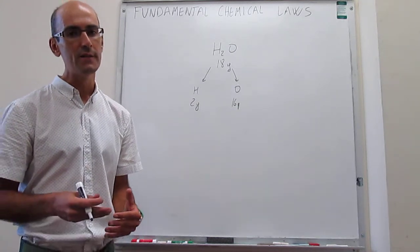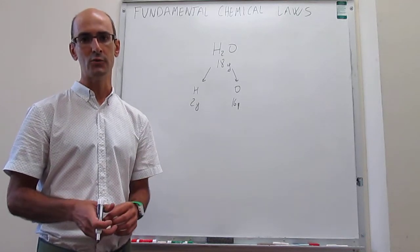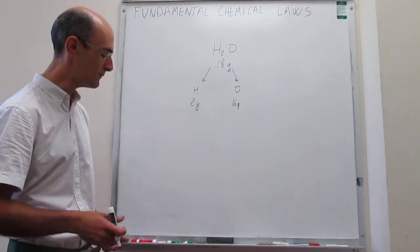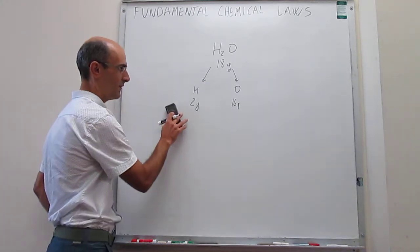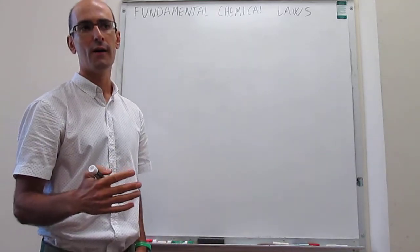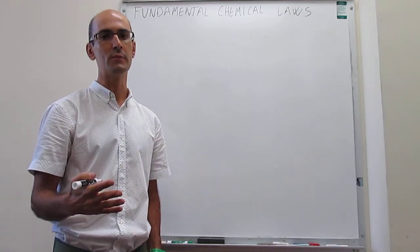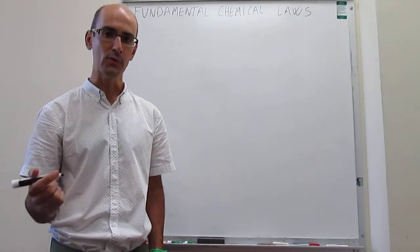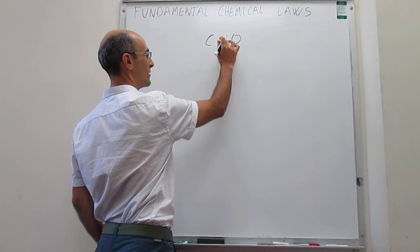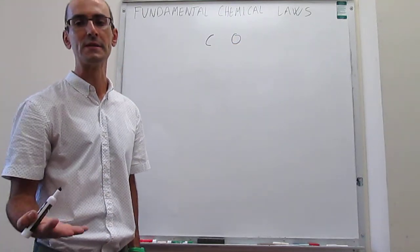From here, Dalton took over and he made another set of observations to come up with the law of multiple proportions. The law of multiple proportions requires consideration of two or more different compounds between the same atoms. Let's take, for example, carbon and oxygen. Carbon and oxygen can combine to form various compounds among themselves.